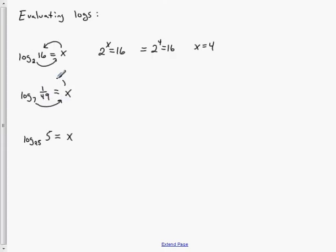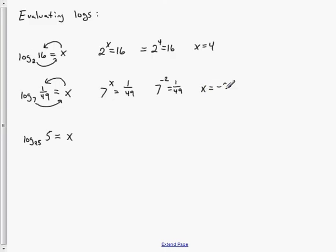For the next one: 7 to the x equals 1 over 49. I know 7 squared is 49, but I want 1 over 49. To make a reciprocal with exponents, we make the exponent negative. So if 7 squared is 49, then 7 to the negative 2 is 1 over 49, which means x equals negative 2.